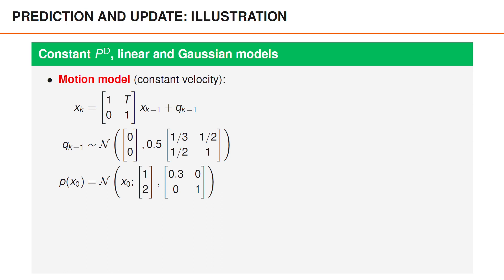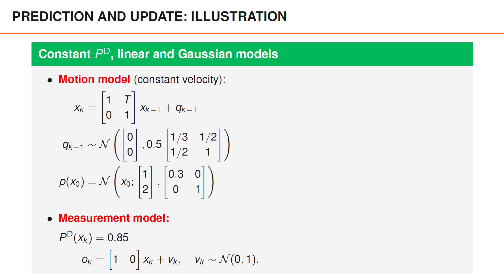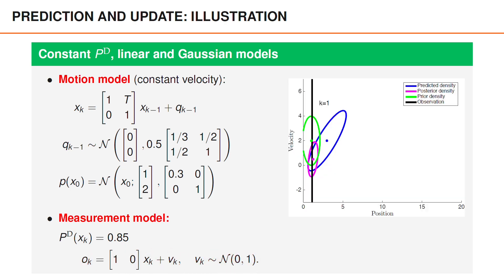Let us finish by visualizing what the prediction and update steps might look like in a more specific example. Suppose we have a two-dimensional state vector representing position and velocity along a line, using a constant velocity model, with a Gaussian initial prior. As a measurement model, we assume a probability of detection of 0.85 (so p_D is constant), and when the object is detected, we observe its position with additive Gaussian noise. The green curve represents the prior at time 0, the blue curve the predicted density at time 1, the black line an observation of the position, and the magenta curve the posterior at time 1. The prediction shifts the PDF and increases the uncertainties, whereas the update step decreases the uncertainties and shifts the density towards regions that match the measurement better.